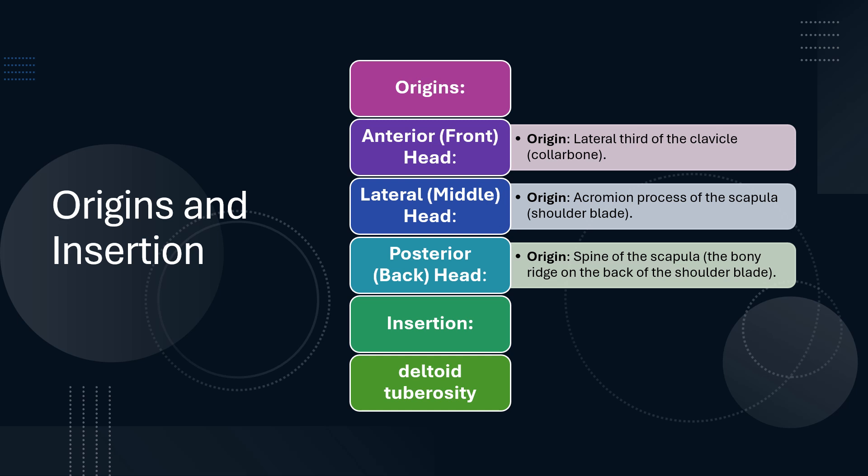All three heads of the deltoid muscle insert at the deltoid tuberosity of the humerus. This insertion point is a V-shaped area about halfway down the humerus where the deltoid muscle attaches, and it allows the muscle to effectively lift and move the arm in various directions.